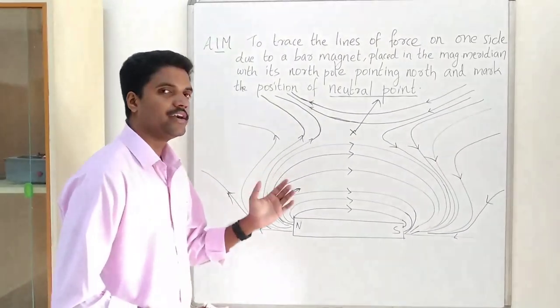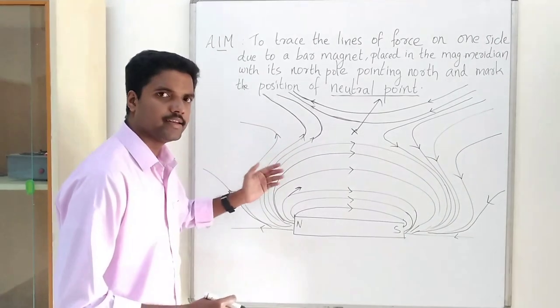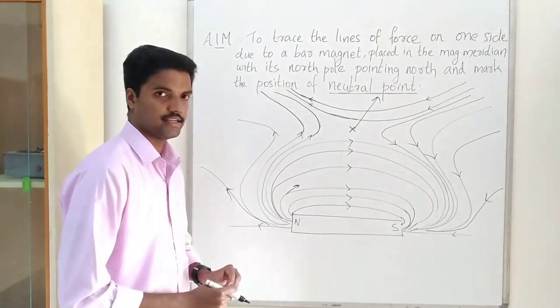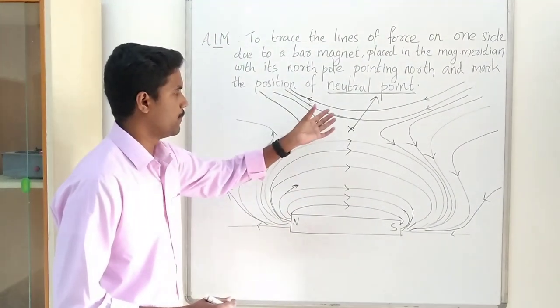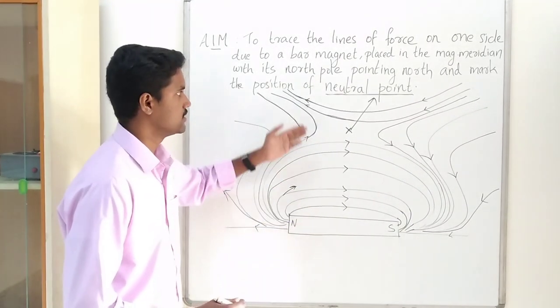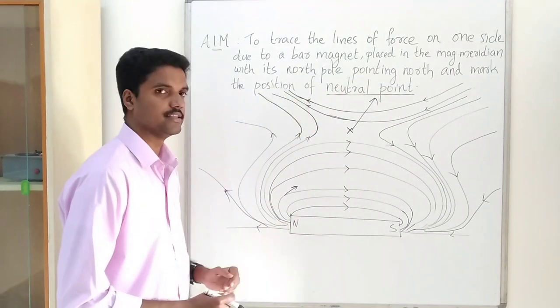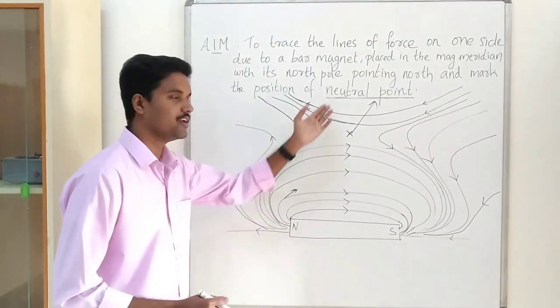Let us discuss what is a neutral point. While we are tracing the magnetic field around the magnet, we will come across the points in which the magnetic line of force of the bar magnet and earth's horizontal intensity neutralized by each other. Such points are called a neutral point.